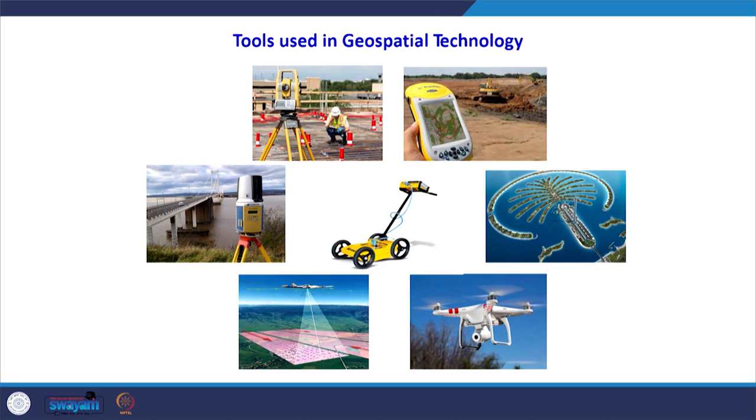In the center is the GPR — ground penetrating radar. As the name suggests, radar beams penetrate into the ground to a certain depth and give us information about what is below the ground. All our utility mappings which are buried below the ground can be very easily mapped with the help of GPR devices.